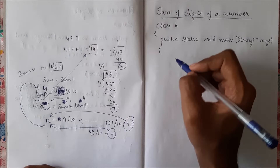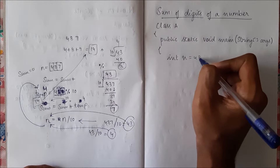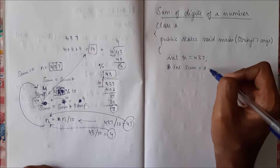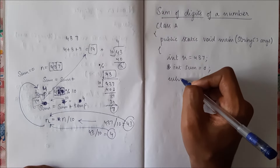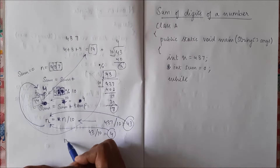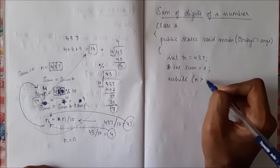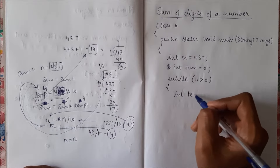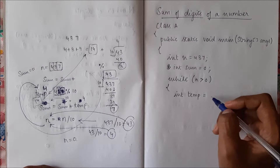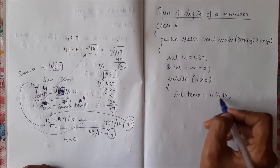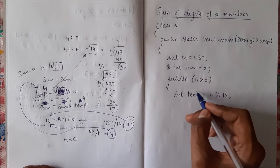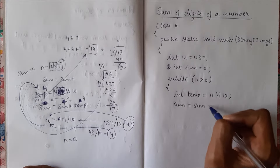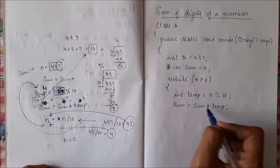Let me write the code. We declare int n equal to 437, and sum equal to 0 initially. We have to do this until n becomes 0, so while n is greater than 0, we enter the loop. Inside the loop we declare one more variable int temp — it is a temporary variable. temp equal to n mod 10. n mod 10 will return the last digit. Now we have the last digit, so we put it inside sum: sum equal to sum plus temp. The last digit got added into sum.